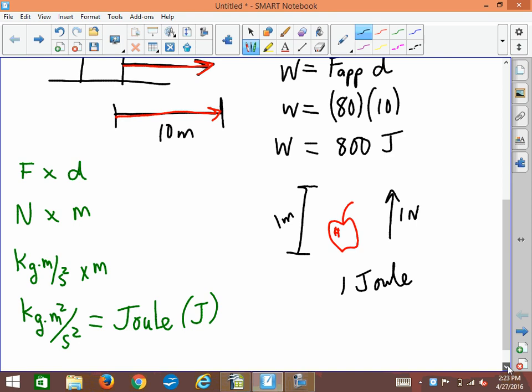So the energy for work or the unit for work is the same as the unit for energy because work really is the same as energy. Work is the cause of a change in energy. Energy is the ability to do work, remember, from the other day.